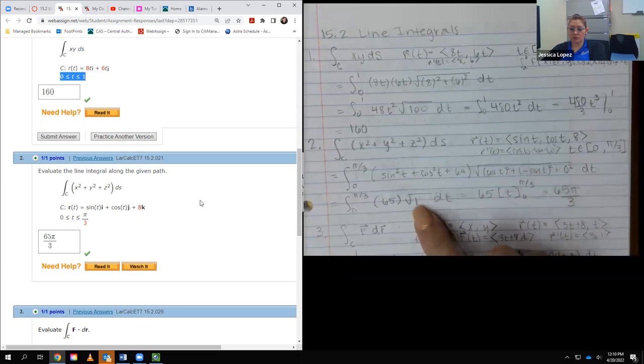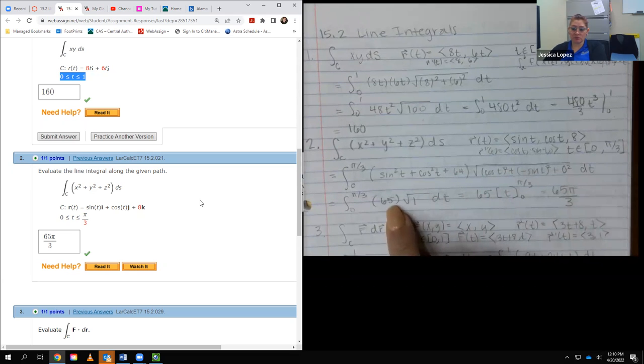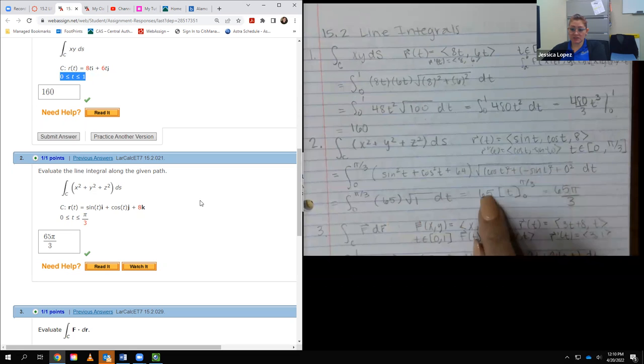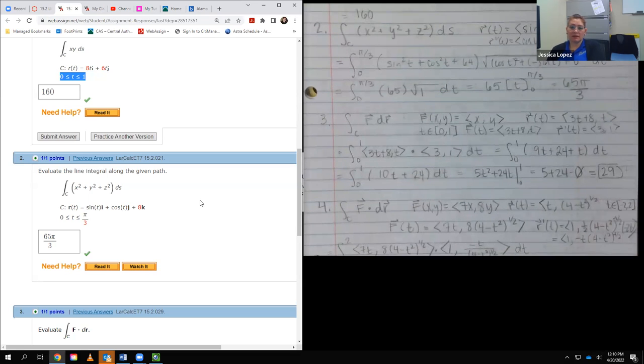So I end up with the square root of 1, which means I'm just integrating 65 with respect to t, which is 65t evaluated at my bounds. When I plug in π over 3 and I plug in 0, I get, after I subtract, I just get π over 3. So I ended up with 65 times π over 3, which is where 65π over 3 came from.